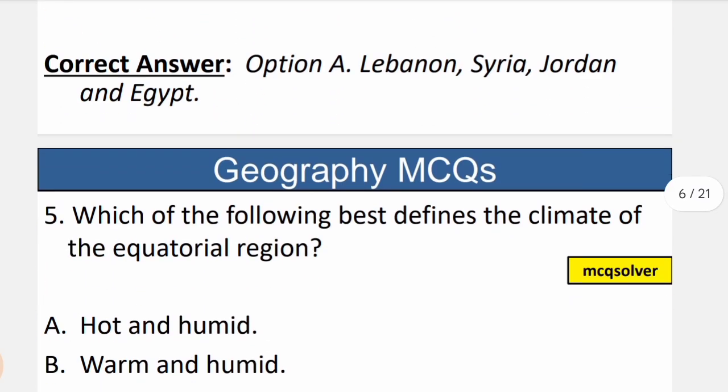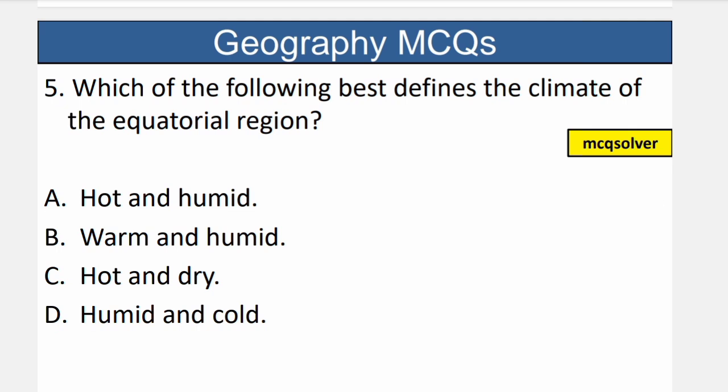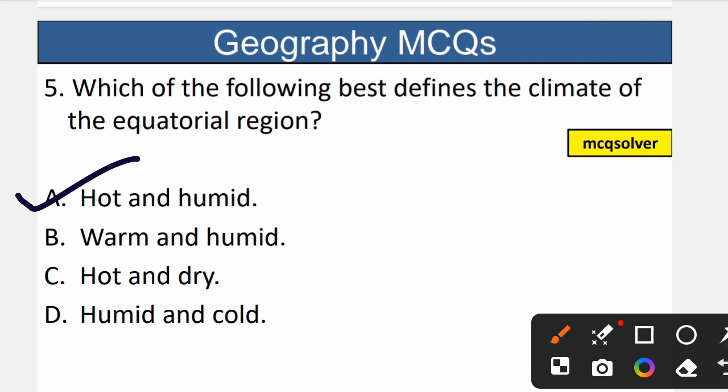Question number 5: Which of the following best defines the climate of the equatorial region? In the equatorial region the climate is hot and humid because temperatures are very high and rainfall occurs on a daily basis. This is also why we find tropical evergreen forests in the equatorial region. So A — hot and humid — is the correct option.